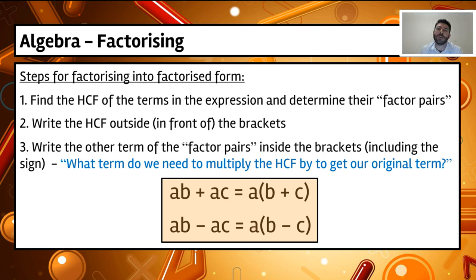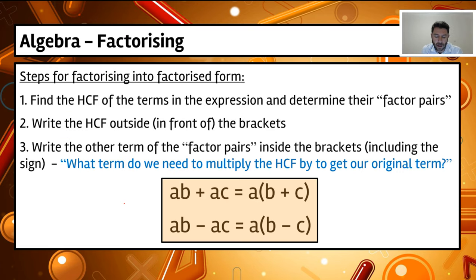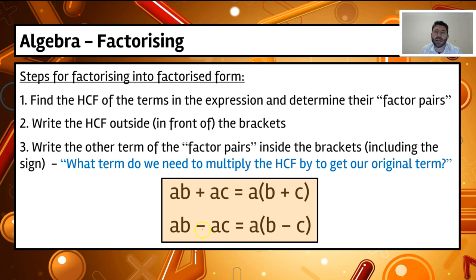A rule of thumb: if we have the form AB + AC, it becomes A(B + C) — a plus sign inside the bracket. If we have the form AB − AC, because we've got a negative, the term inside the bracket needs to be negative. So if you see a plus sign in the expression, there'll be a plus sign inside the bracket; if you see a minus sign in the expression, more often than not, that's going to be a minus sign inside the bracket.